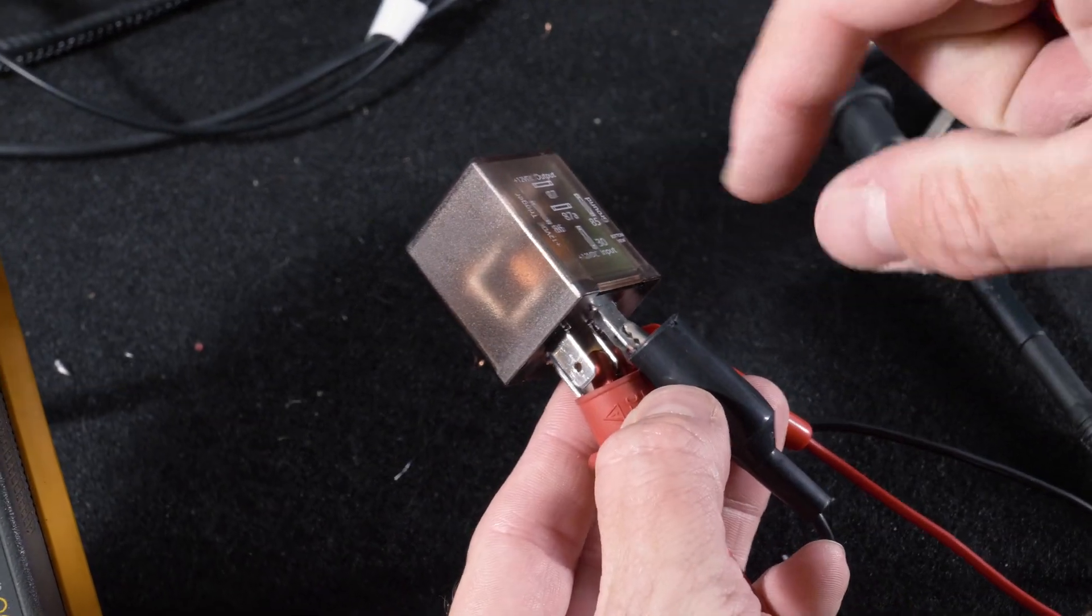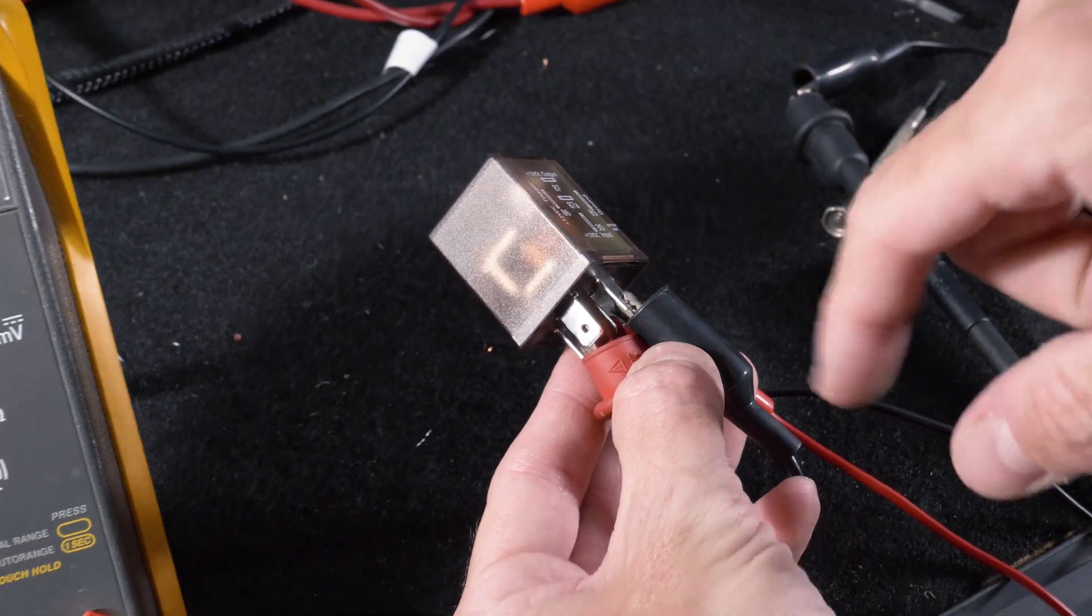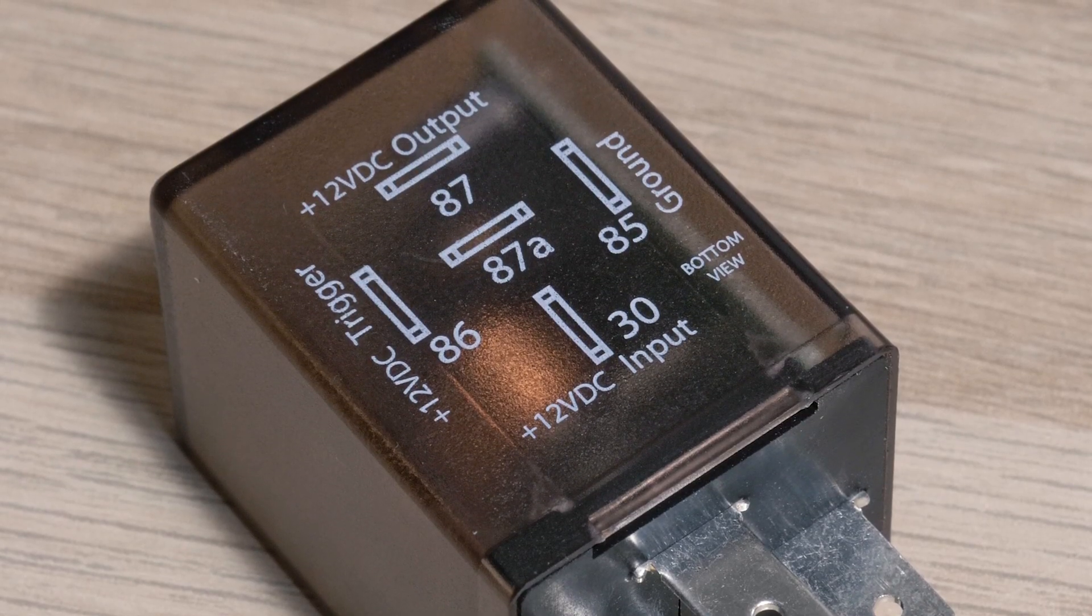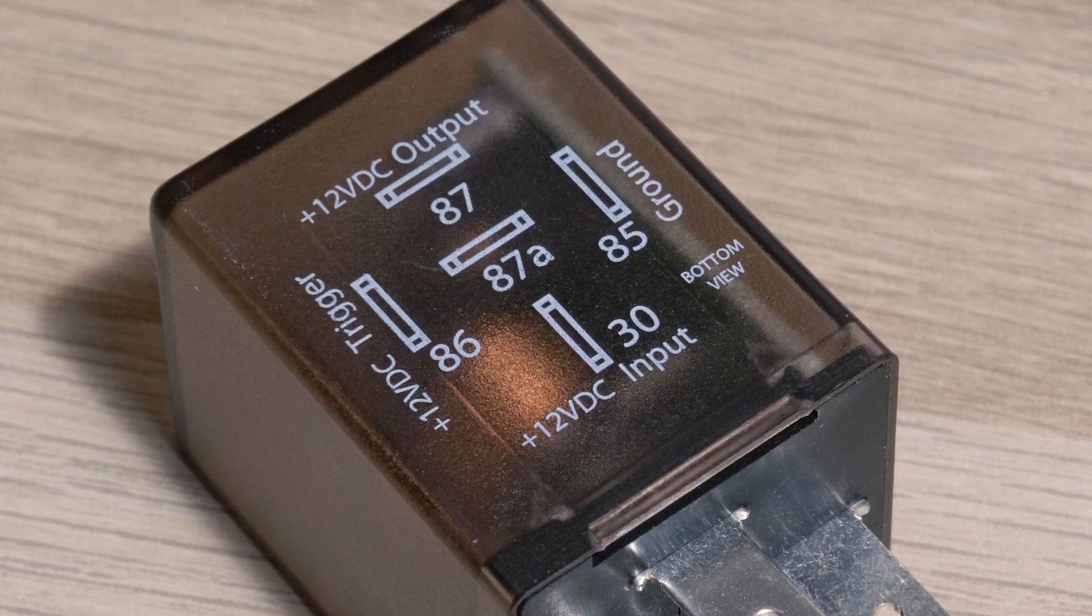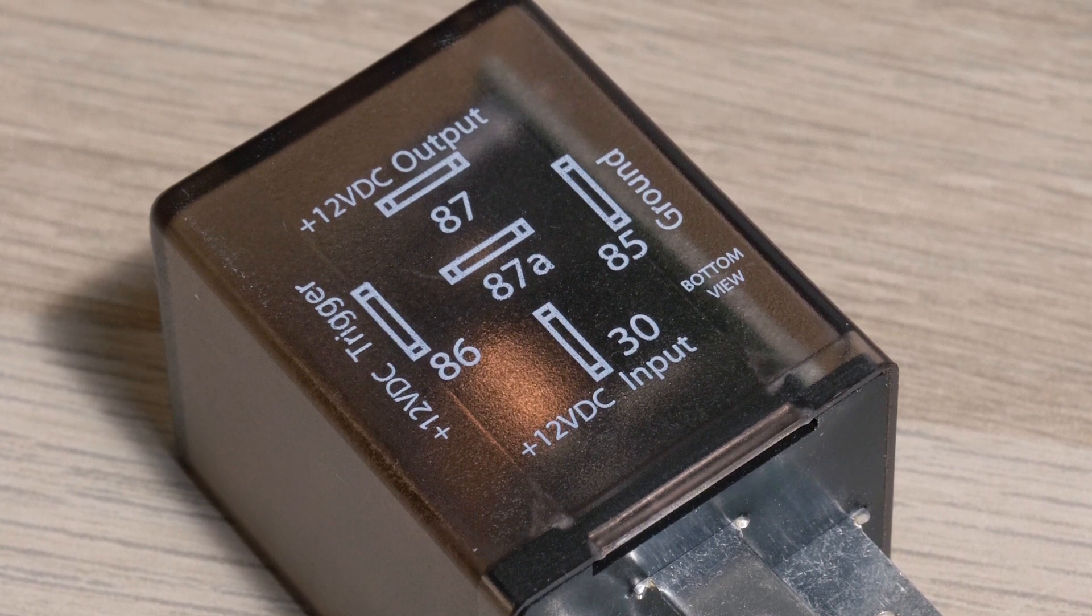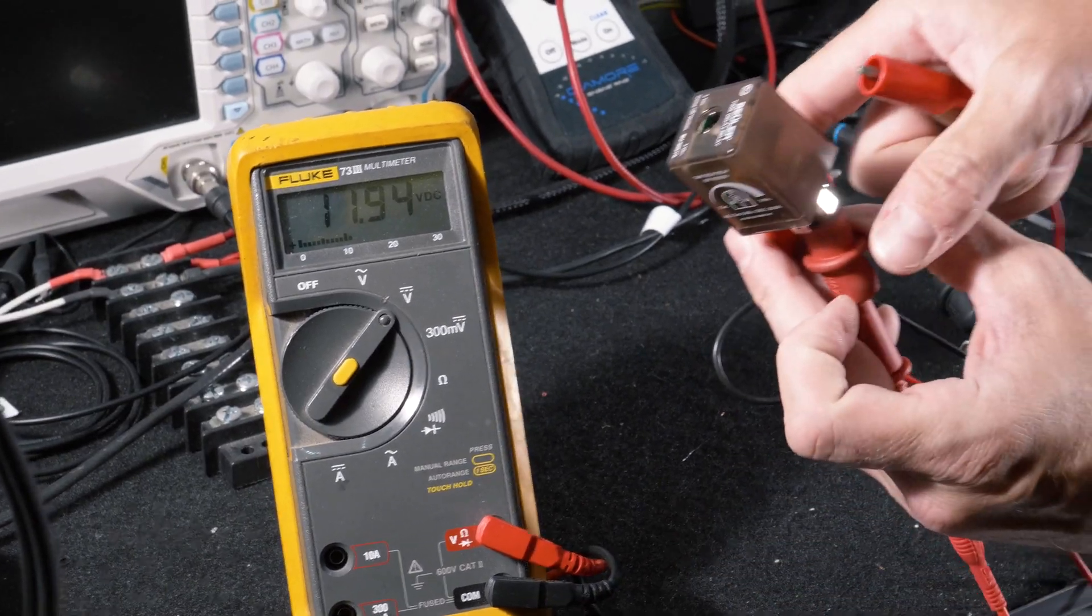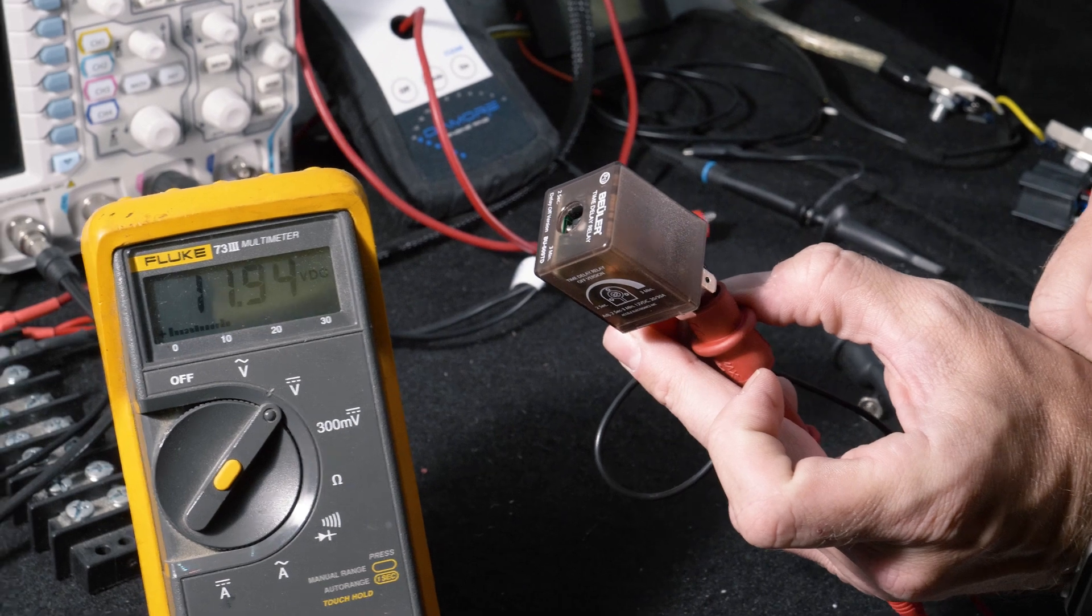This relay has the exact same base as a conventional automotive relay. Our middle contact which is pin 87A is our normally closed and pin 87 is our normally open. You can see that on the voltmeter we have 12 volts as the relay is in standby.